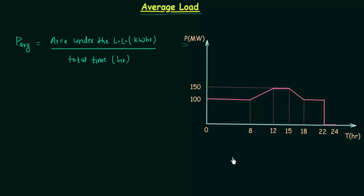If you have a monthly load curve then the total time will be 30 or 31 multiplied by 24 hours, because the unit must be in hours. To calculate the area under the load curve there are two ways. The first way is to find the definite integral from 0 to 24 hours.